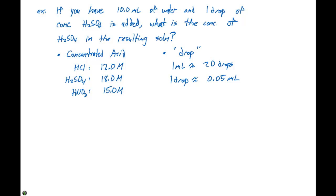So one drop is roughly 0.05 milliliters. In this case, we're taking 0.05 milliliters of H2SO4. First, in order to find the concentration, we need to convert this over to moles.